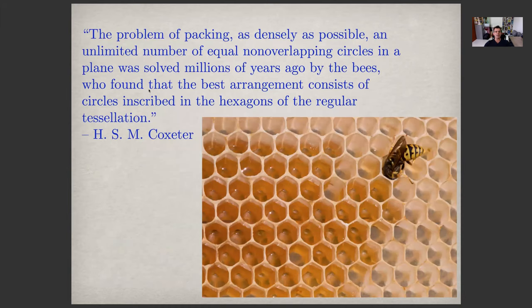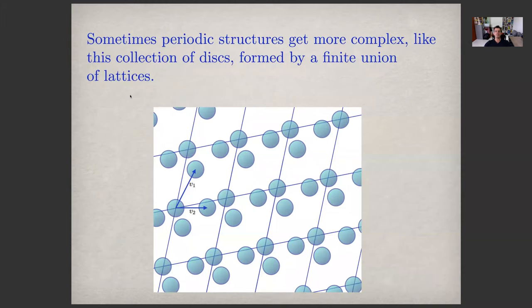I love this quote by Coxeter: the problem of packing as densely as possible an unlimited number of equal non-overlapping circles in a plane was solved millions of years ago by the bees, who found that the best arrangement consists of circles inscribed in the hexagons of the regular tessellation. Mother Nature knows best, and we will attempt to understand Mother Nature a little bit better.